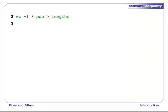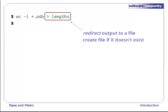Our first step towards a solution is to run the command wc -l star.pdb greater than lengths. Greater than tells the shell to redirect the output to a file instead of printing it to the screen. The shell will create the file if it doesn't exist, or overwrite its contents if it does.